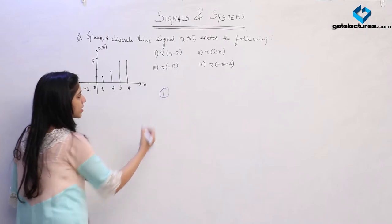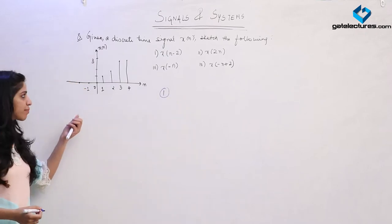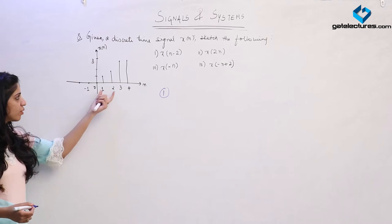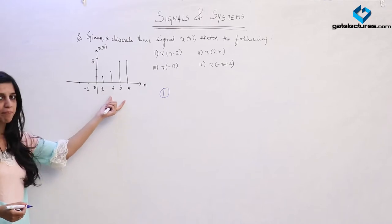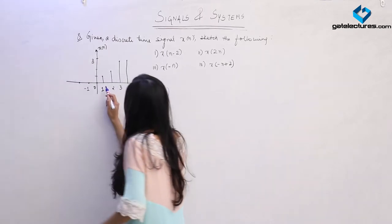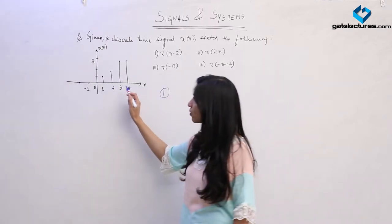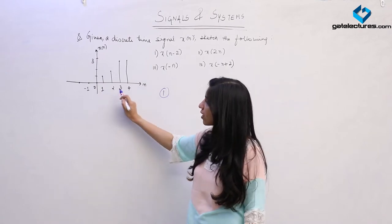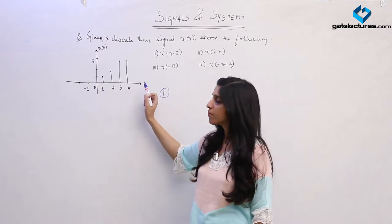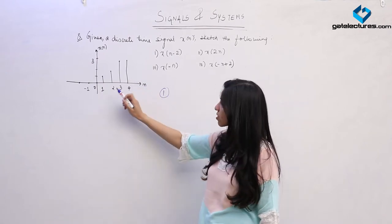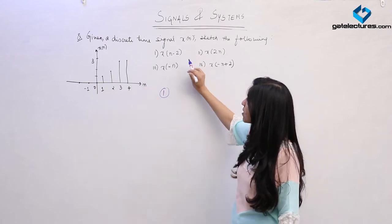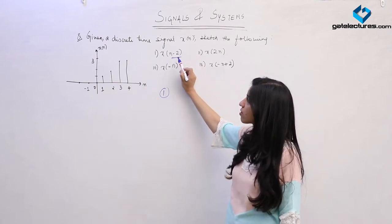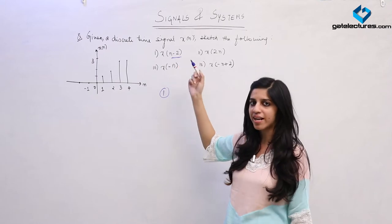The first operation is time shifting. Since this is a discrete time signal we are having only 4 samples. These values are known as samples, occurring only at 4 time points. So we are having 4 samples. When we perform this time shifting, since there is a minus sign, this is going to be a right shift.